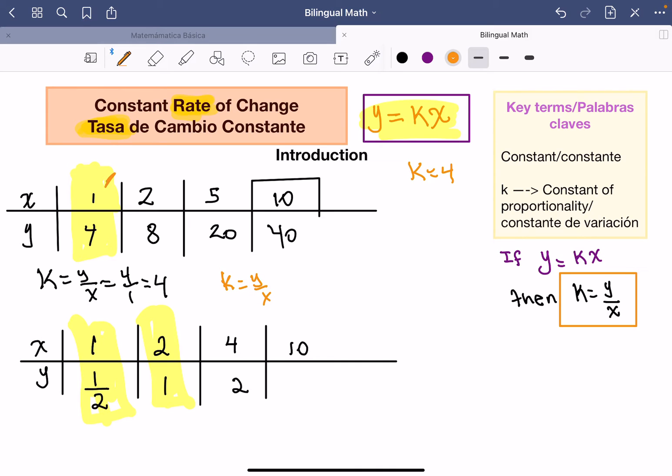Y tomen en cuenta este valor. Y es igual a 4. 4 sobre 1 es igual a 4. Pueden ver que tenemos lo mismo. Entonces k es igual a 4. Pueden seguir verificando. 8 entre 2, 4. 20 entre 5, 4. Por lo tanto, sí es.